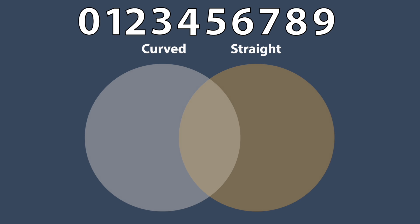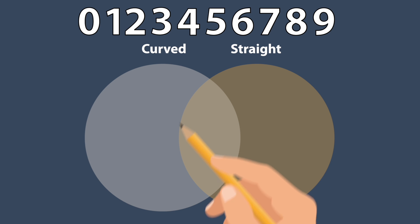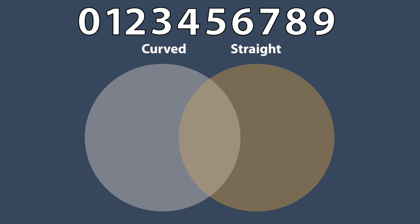Here we have a list of numbers from 0 to 9. If you look closely, they all have different shapes. Some of them have straight lines, some of them curved, and some have both. Let's use a Venn Diagram to compare. We draw two circles that overlap. The left circle has numbers made with only curved lines. The right circle has numbers made with only straight lines. The overlapping part is for numbers that have both curved lines and straight lines.